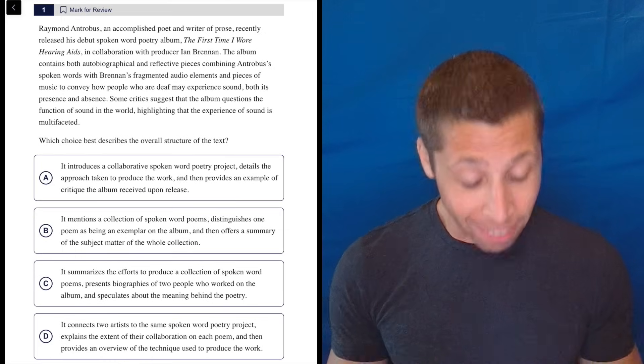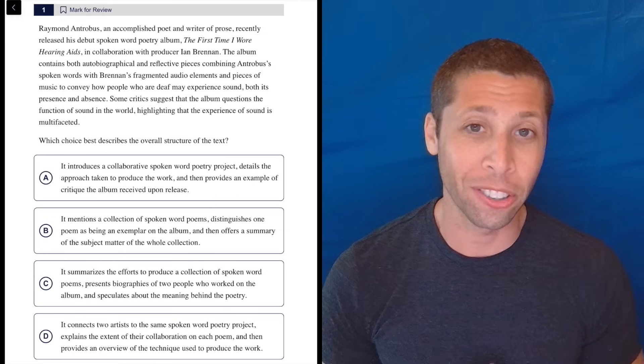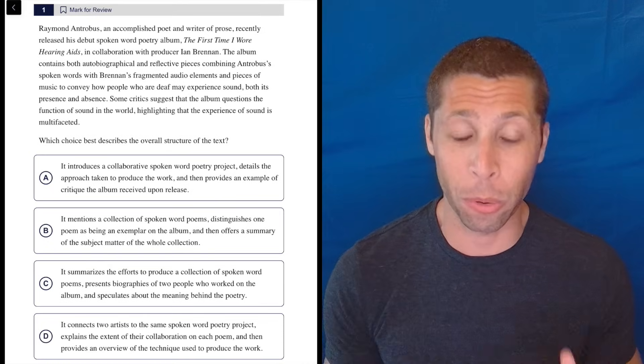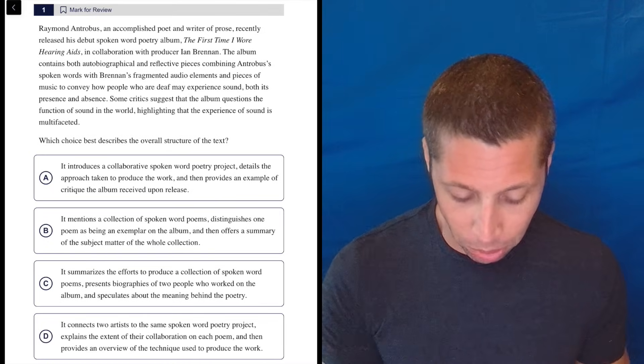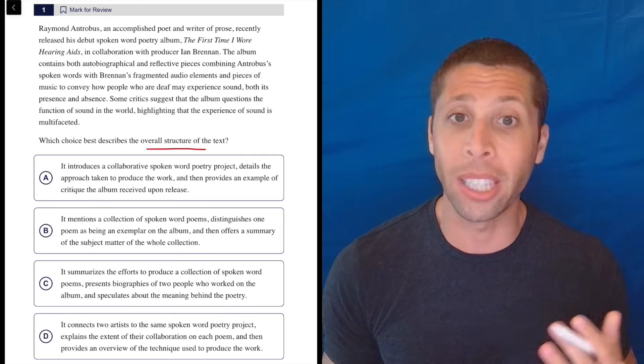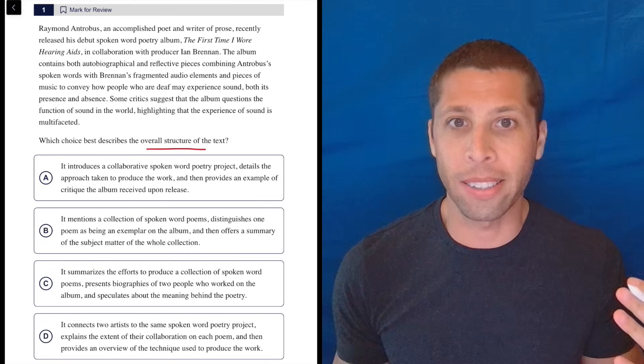All right. So the answer choices of this are kind of long. That might mean that it's a harder question. So use that as you're trying to decide what questions to work on in the hard module when the time is running short, but obviously we're going to give it a shot. It's the overall structure of the text. So I'm just kind of reading this thinking, is there anything that stands out?